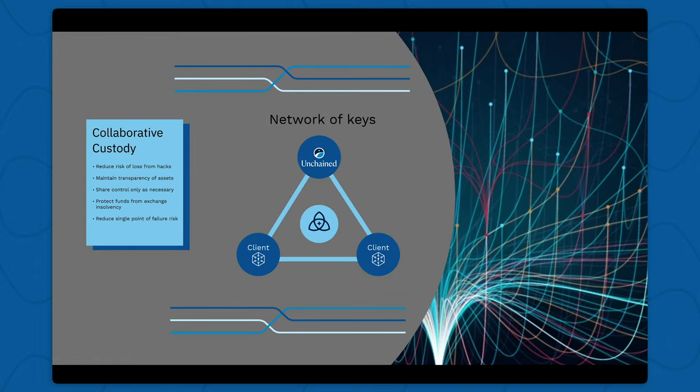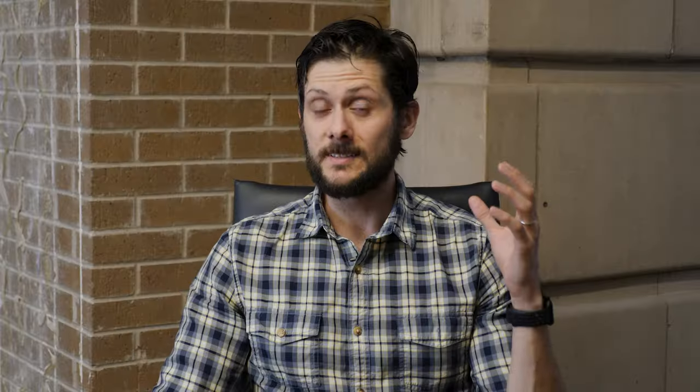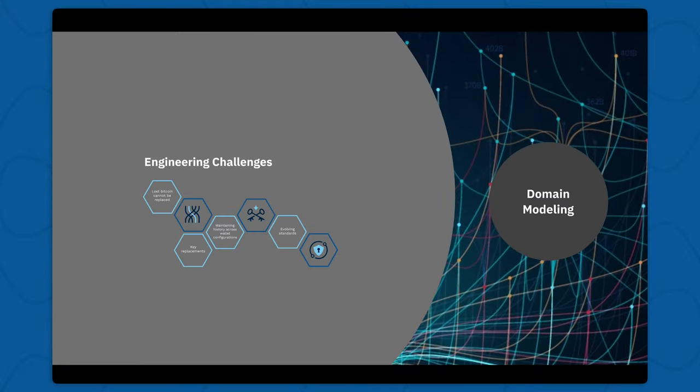All of this is built on top of this idea of a network of keys. This is what really allows us to provide the benefits of collaborative custody. Our default is Unchained might have one key and our clients will have two keys. You might have another institution with our delegated custody model that has one of those keys, so really nobody has full spending control — it's really this network, this collaboration. This is not an easy thing to build on top of.